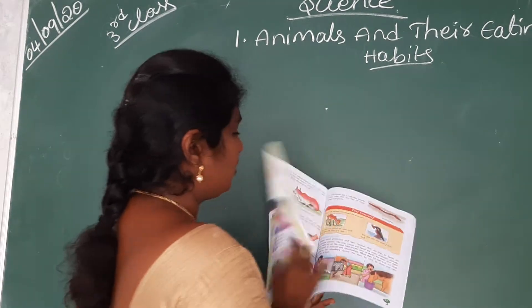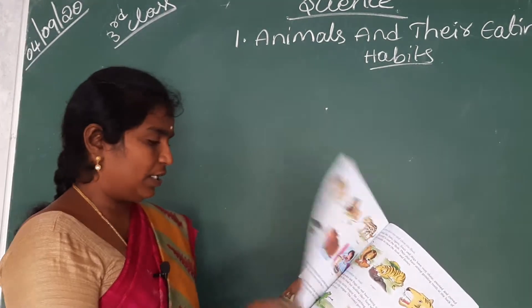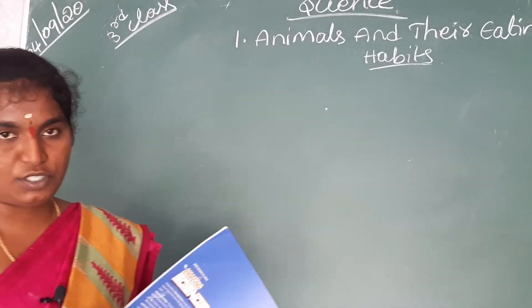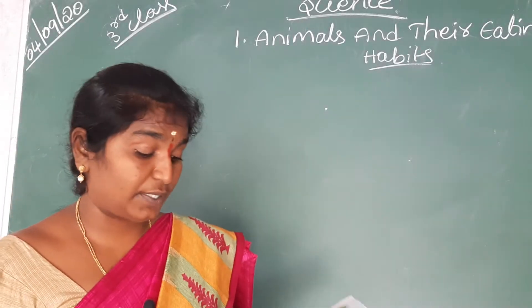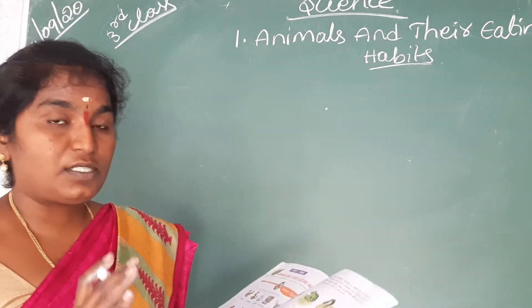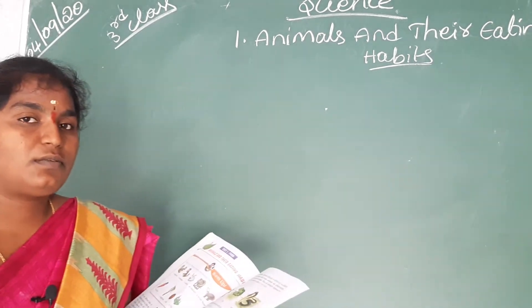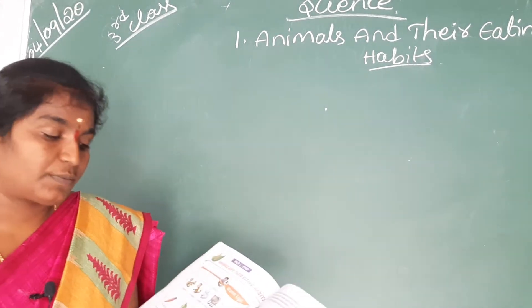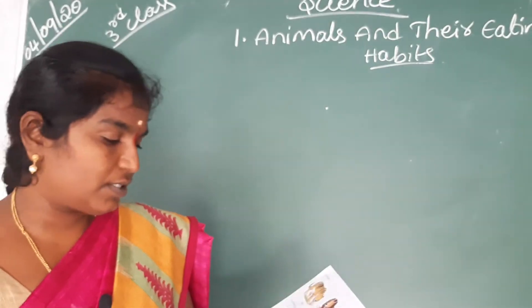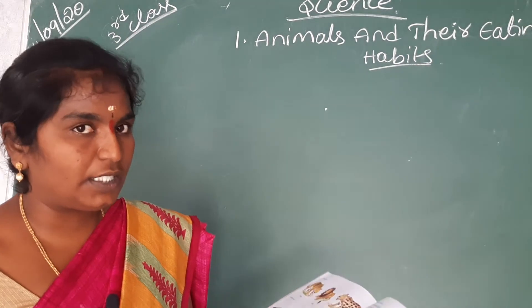In this lesson, I explained about how animals take food, which animals, and about the food chain. Animals are classified into three groups: omnivores, carnivores, and herbivores, based on their feeding and eating habits. And how the animals eat the food.